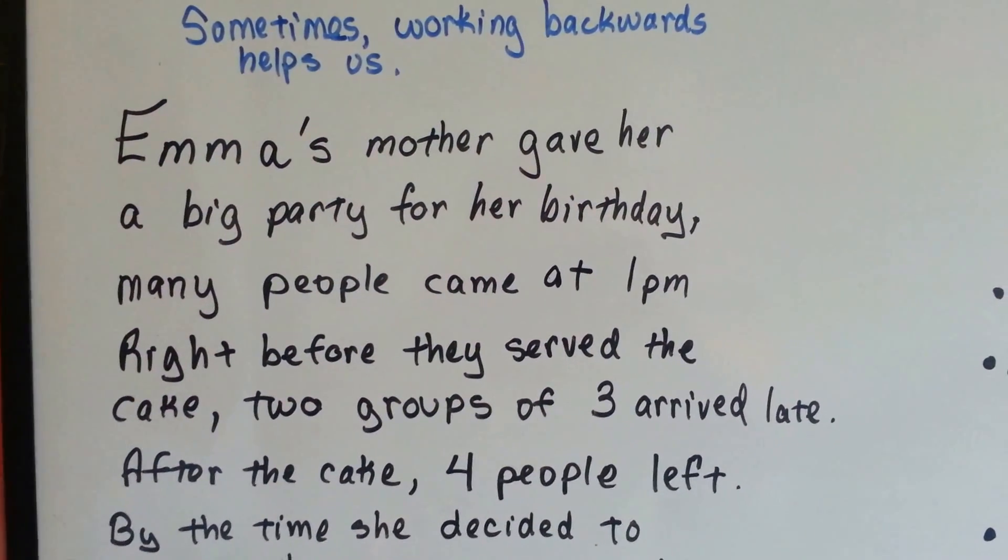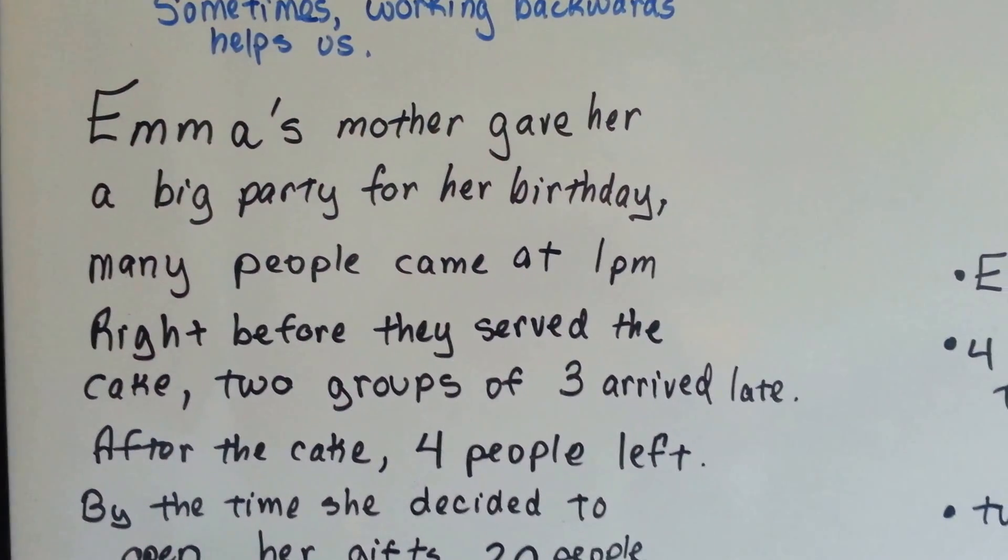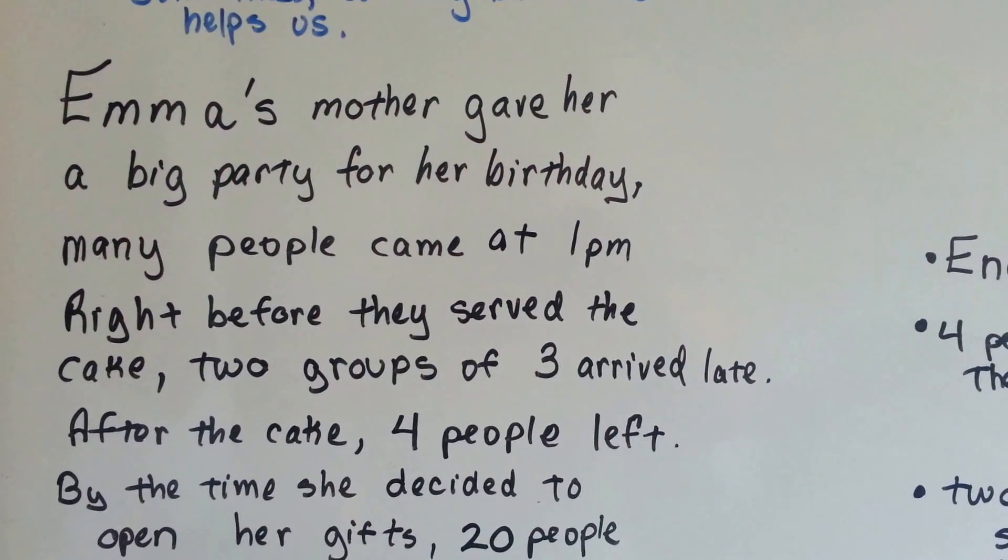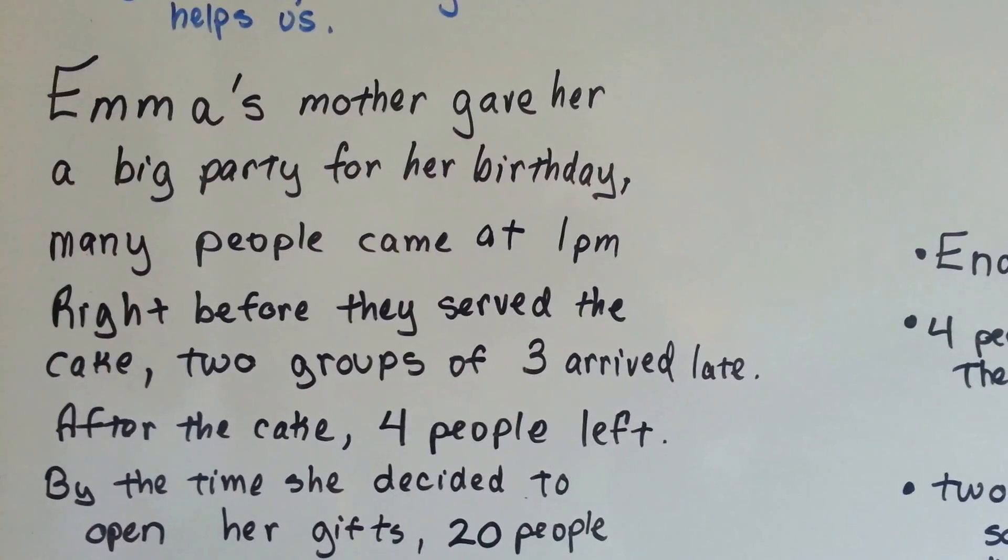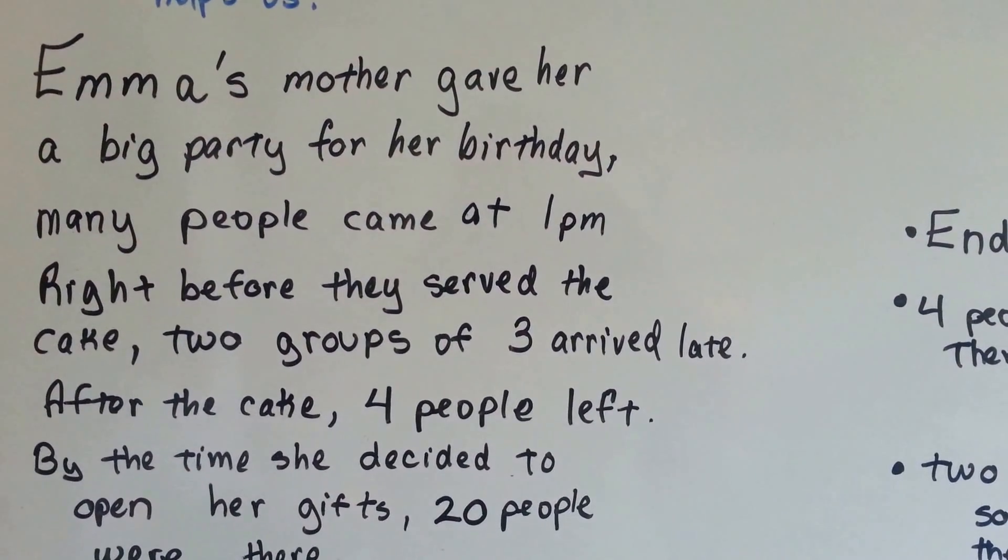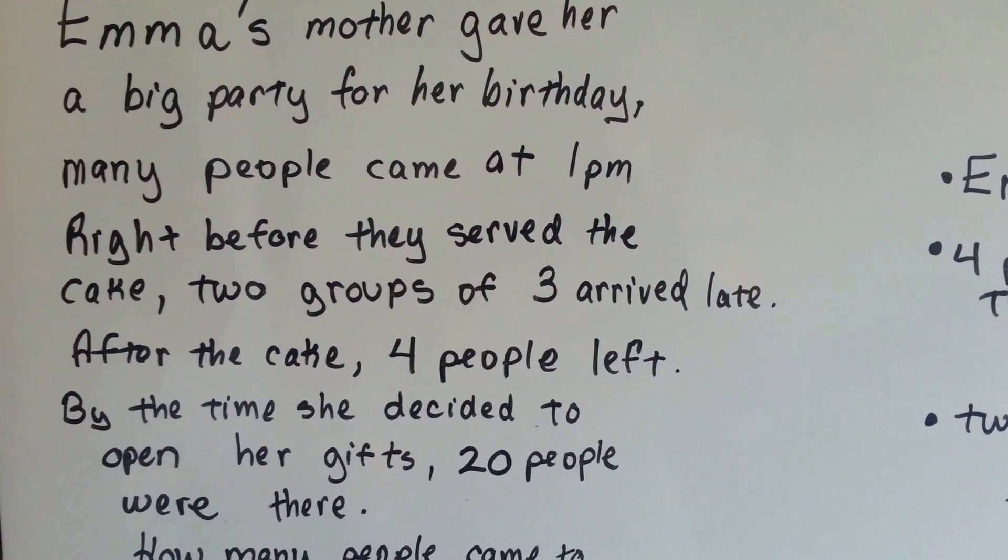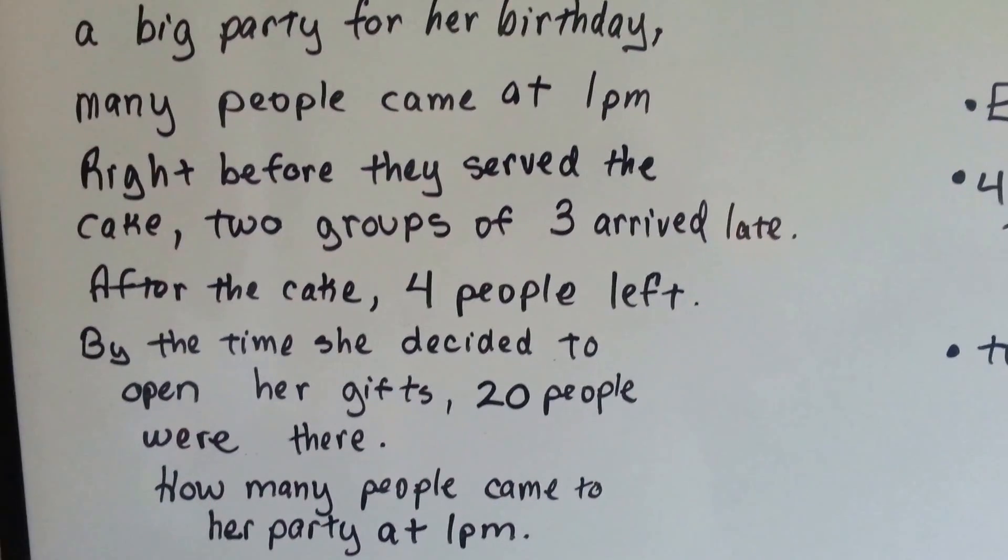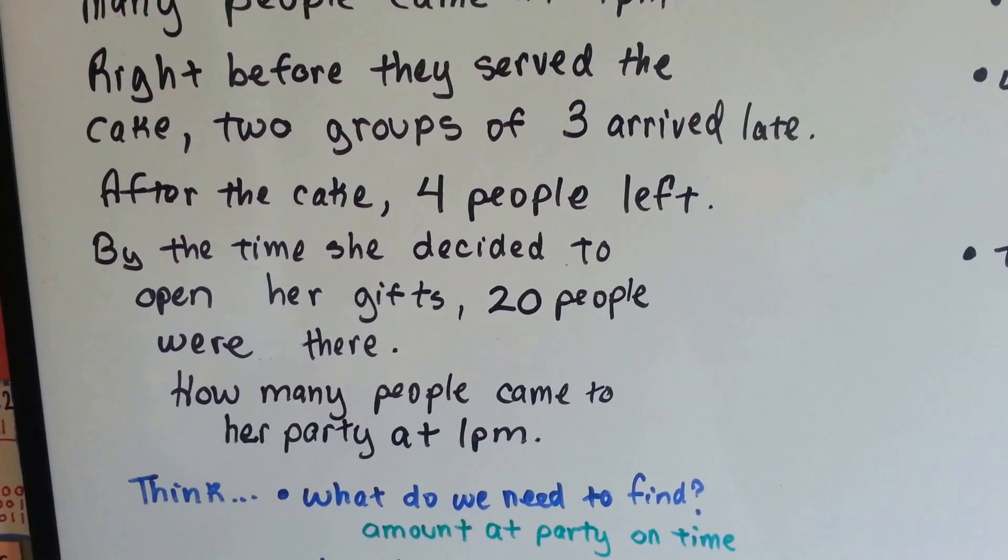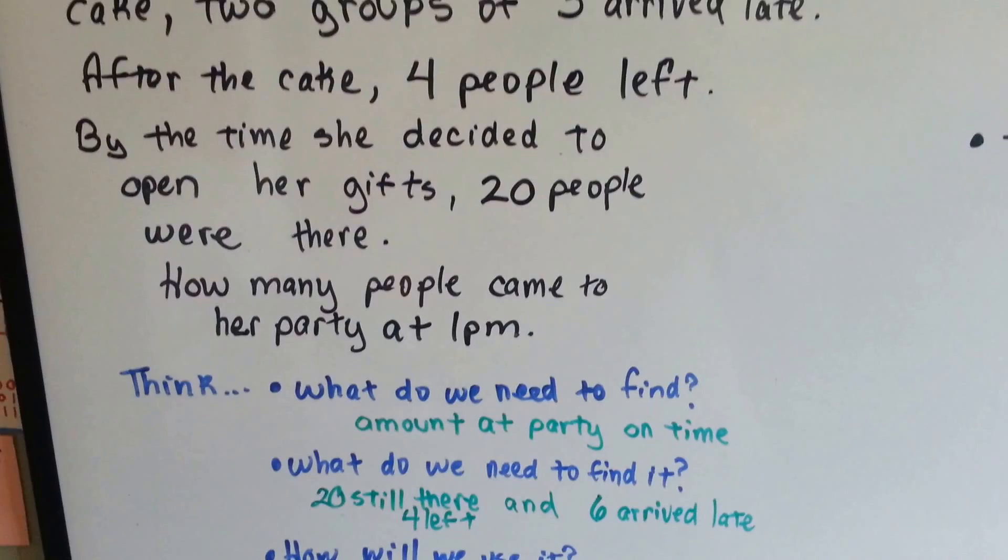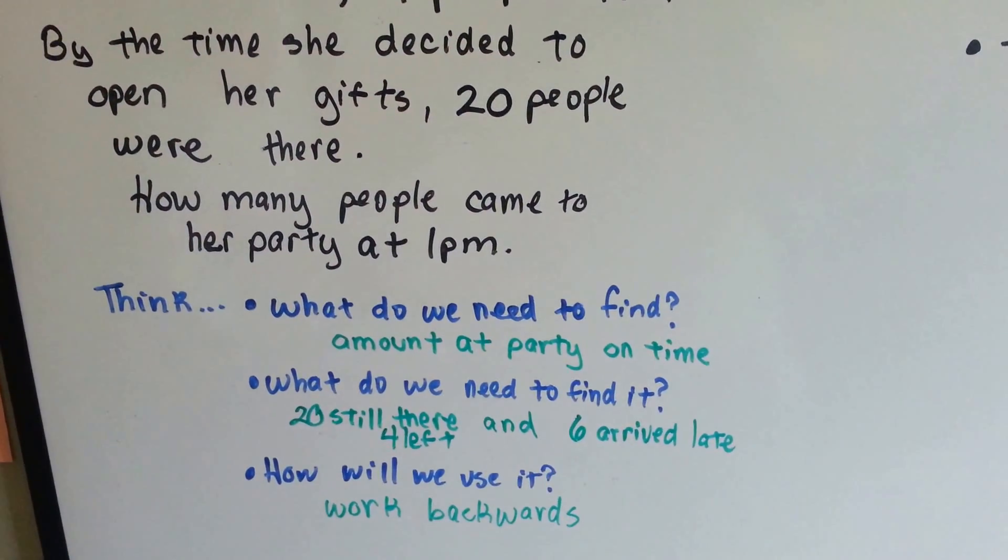Emma's mother gave her a big party for her birthday. Many people came at 1pm, right when they were supposed to. Right before they served the cake, two groups of three arrived late. After the cake, four people left. By the time she decided to open her gifts, 20 people were there. So how many people came to her party at 1pm?